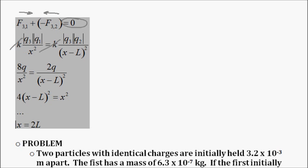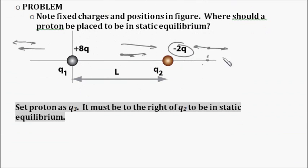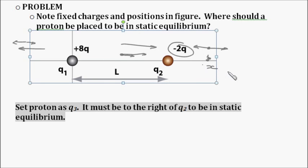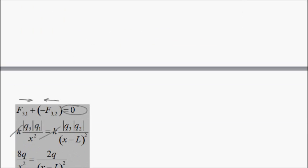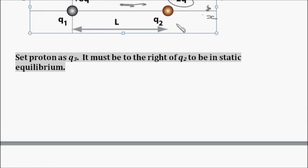So particle 3 to particle 1. If we put particle 3 here to particle 1, this is going to be at whatever x value we have. If we look at the distance between 3 and 2, so this distance here.